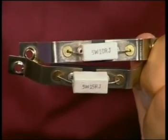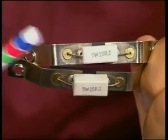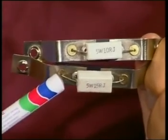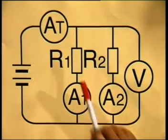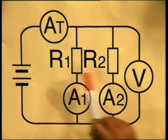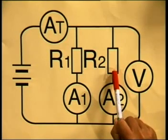Let's investigate current in a parallel circuit by setting up a circuit. I will use two resistors. One has a resistance of 10 ohms and the other has a resistance of 15 ohms. We will measure the current through the whole circuit as well as the current through each individual resistor. In this diagram, the resistors are placed alongside each other, that is, parallel to each other.